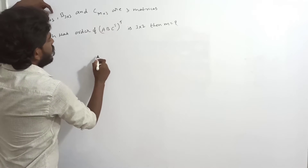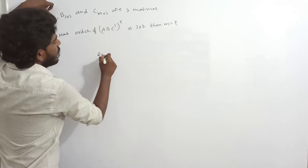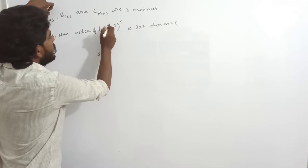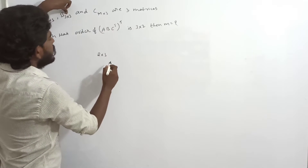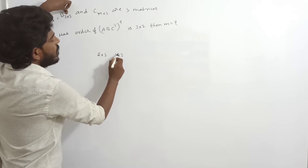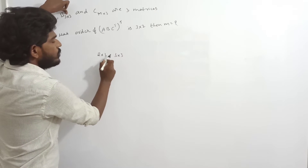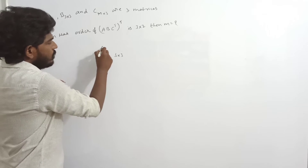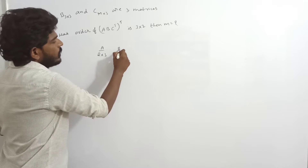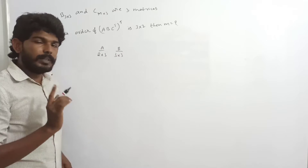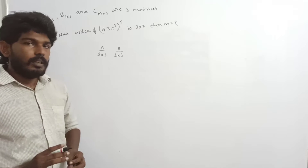A is a matrix of order 2 by 3. B is 3 by 3. These two match, so multiplication exists and the result is 2 by 3. Next, C transpose: if C is of order M by 3, then C transpose is of order 3 by M.